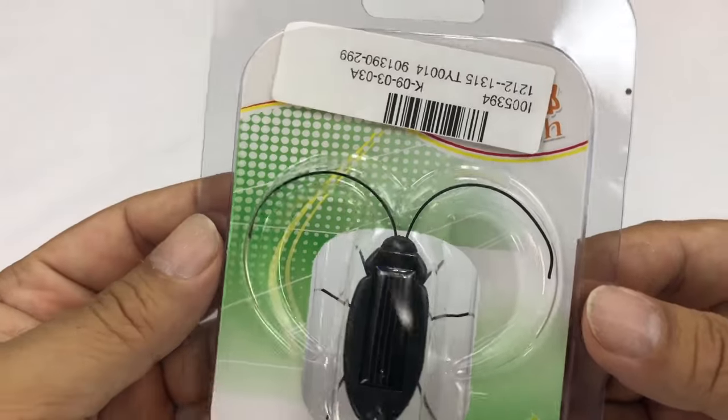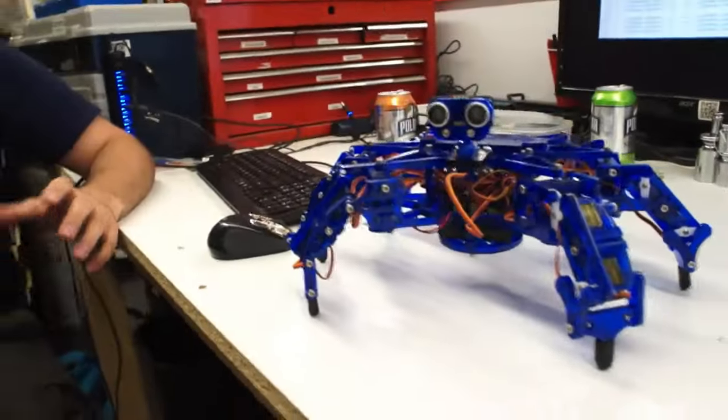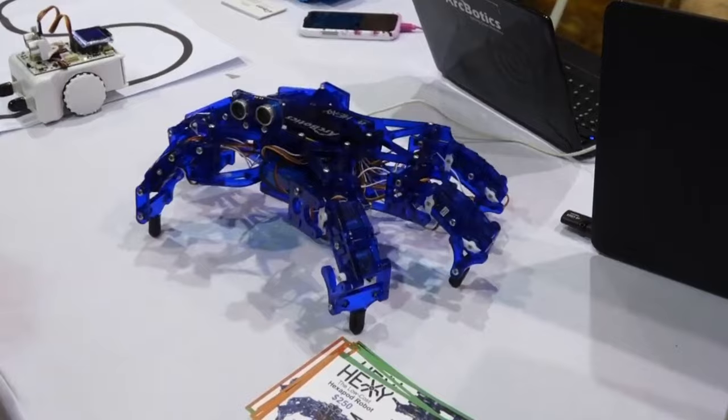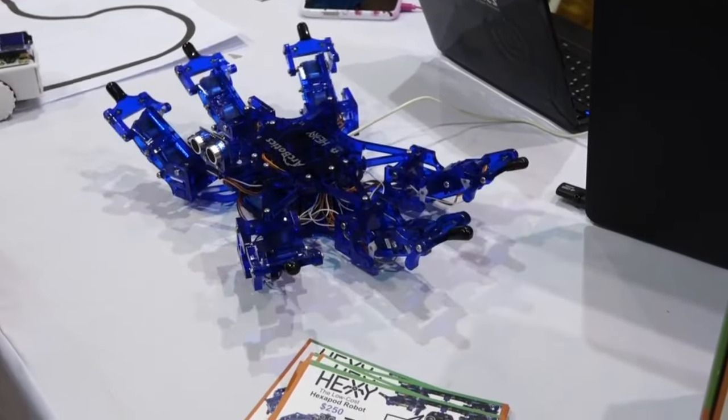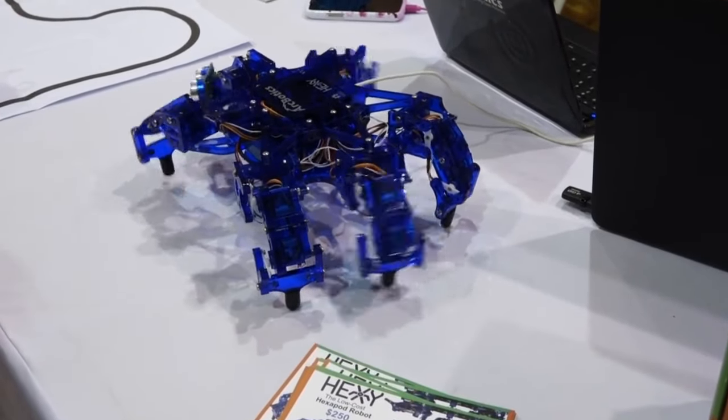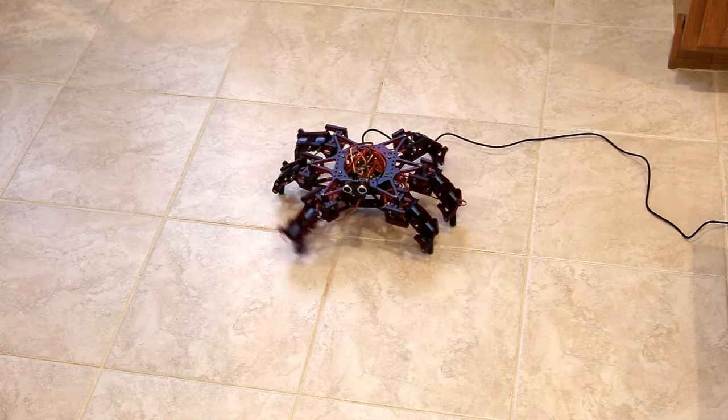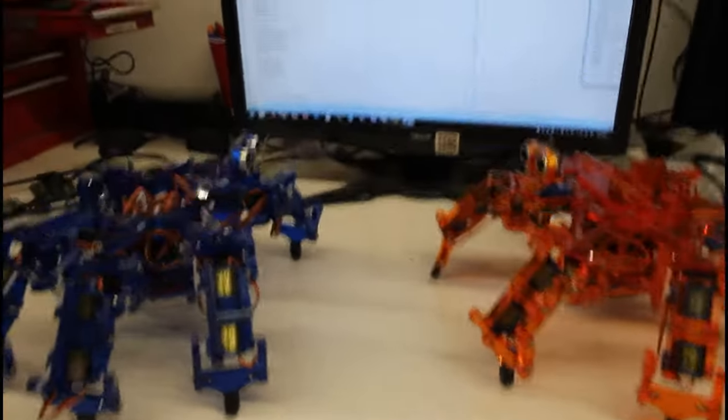Maybe you will need the Hexi the Hexapod robot. Hexi the Hexapod is a six-legged robot that gives a remarkable introduction to superior robotics, programming, and kinematics. Hexi makes use of a Servitor 32 microcontroller specially designed for controlling servos. The Servitor 32 is an Arduino microcontroller that uses the same ATmega32U4 chip as the Arduino Leonardo.